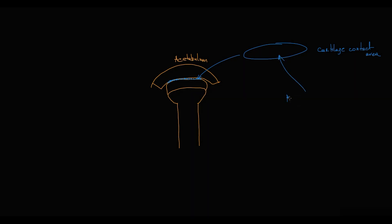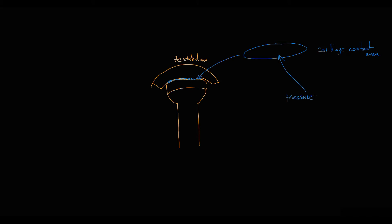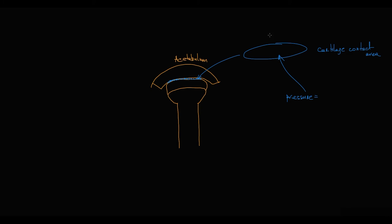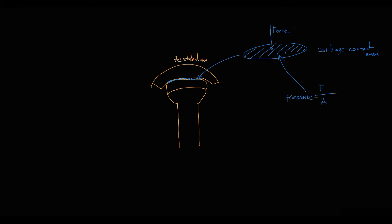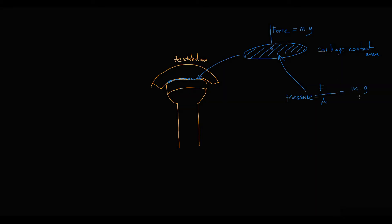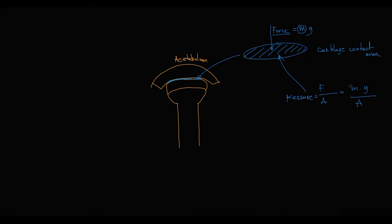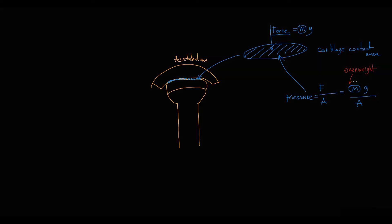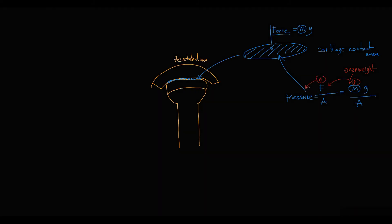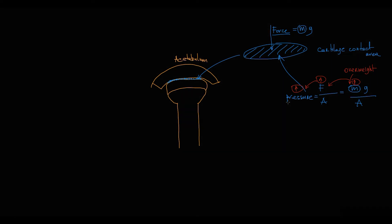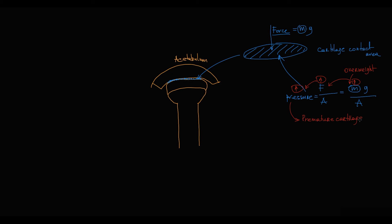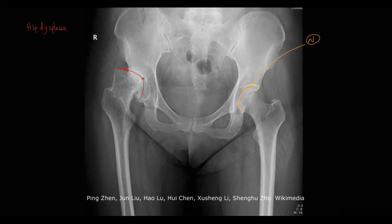The main function of cartilage is to absorb pressure applied to the joint during physical activity. Even during standing, the pressure applied to cartilage equals force divided by cartilage surface area, and force equals mass times the gravity constant. So the force acting on cartilage is determined by the person's weight — that's why overweight persons have increased risk of osteoarthritis, as higher mass means higher force, higher pressure load, and therefore more cartilage degradation.